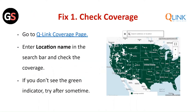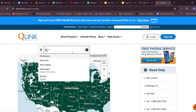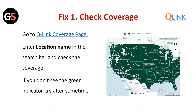Fix One — Check the Coverage: go to the Q-Link Coverage page, enter the location name in the search bar and check the coverage. If you do not see the green indicator, try again after some time.